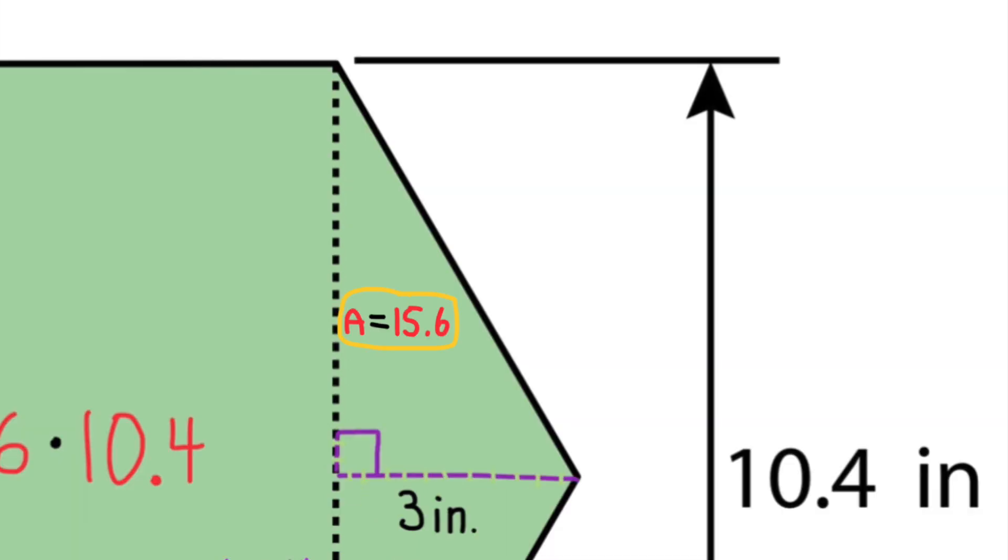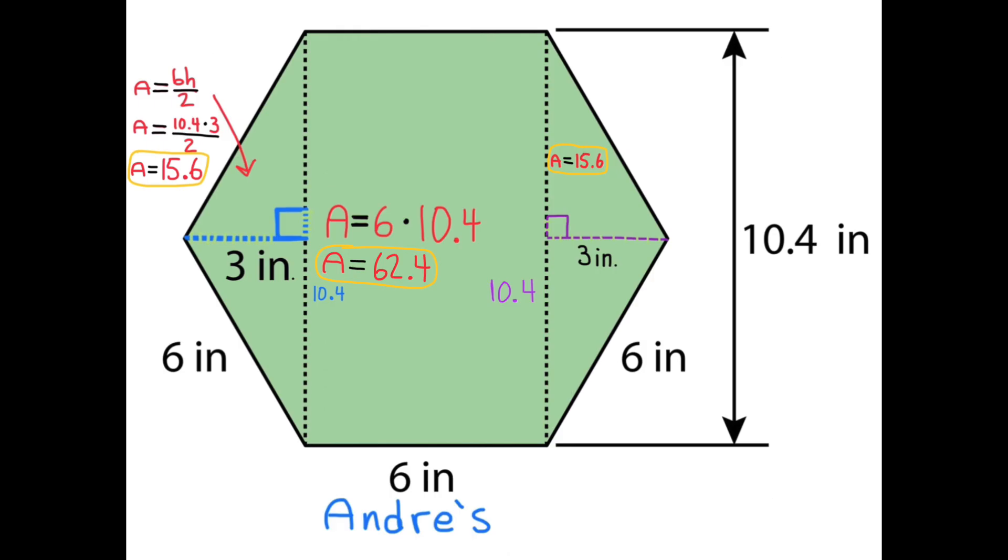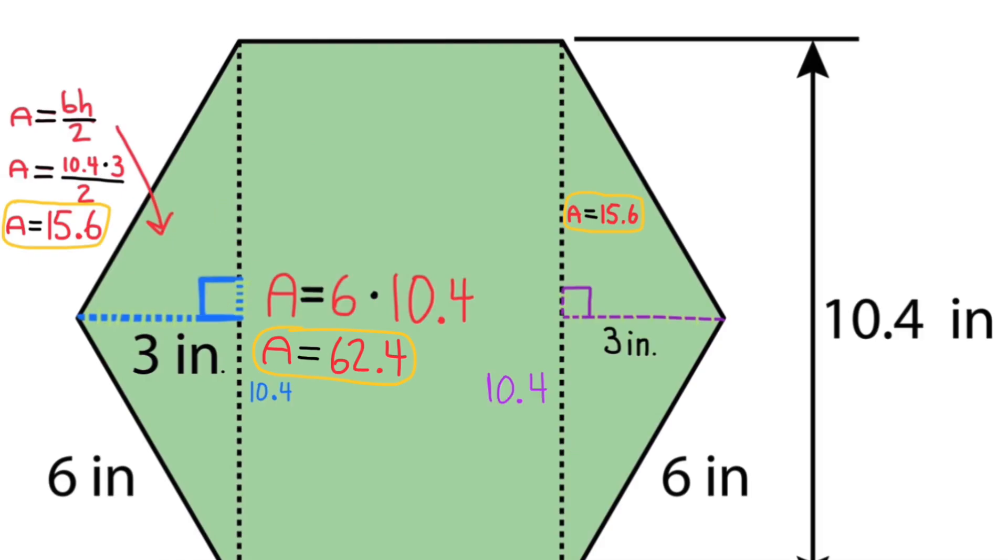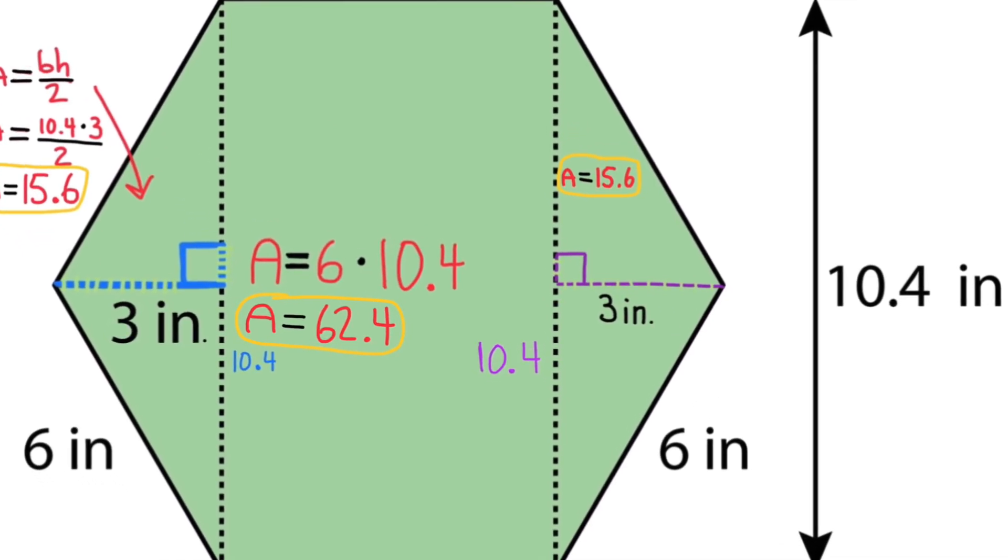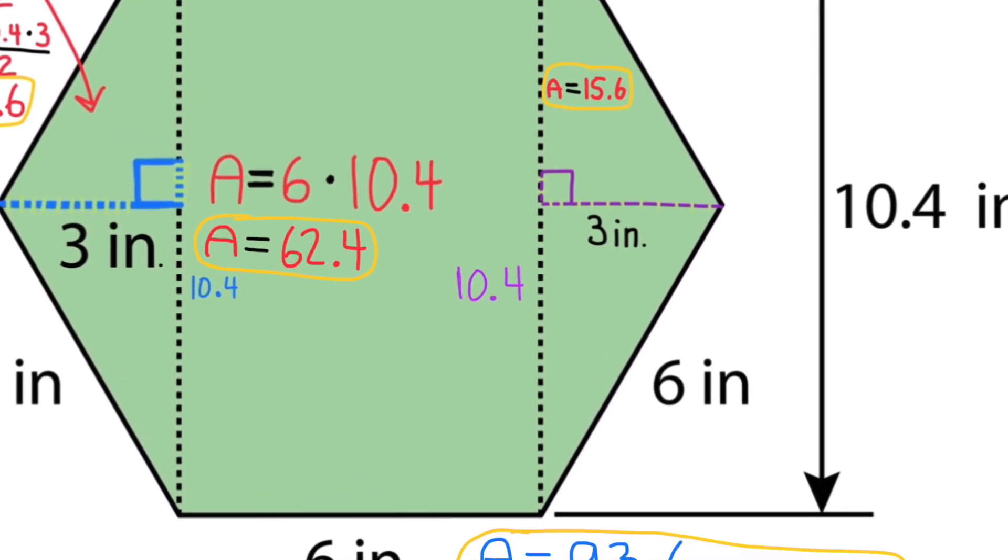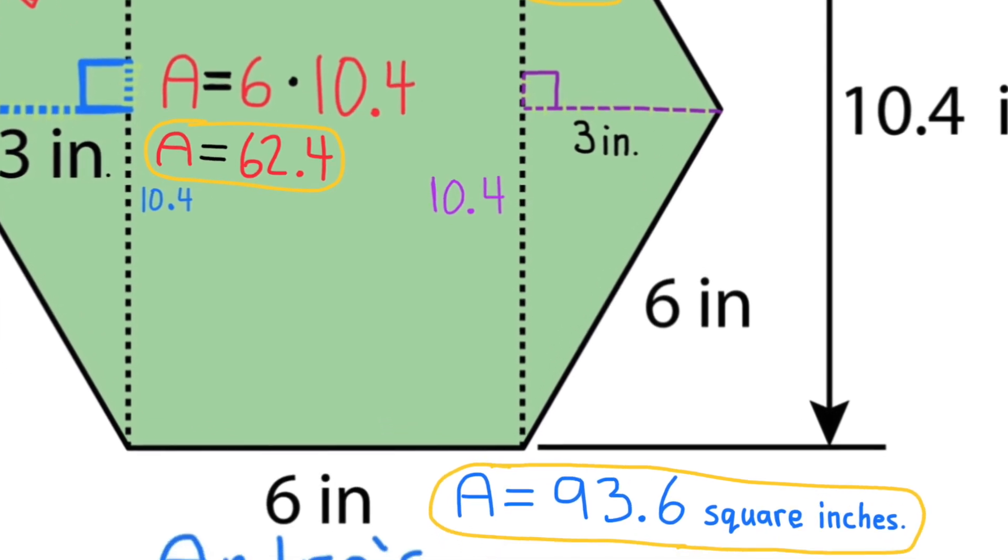Simply add the area of the two triangles and the area of the rectangle, and you'll have the area of the hexagon. The area of the hexagon is 93.6 square inches.